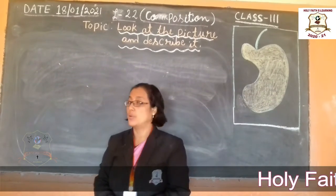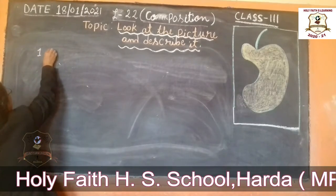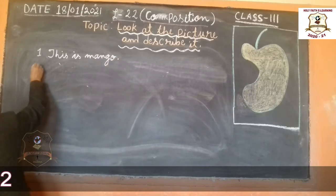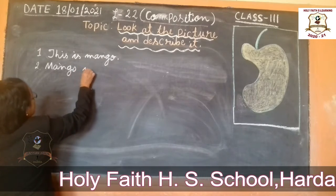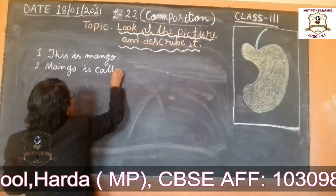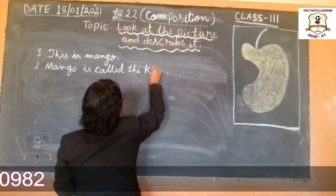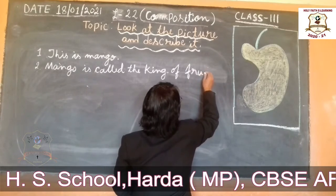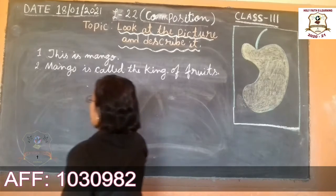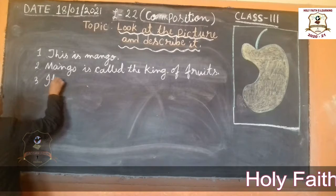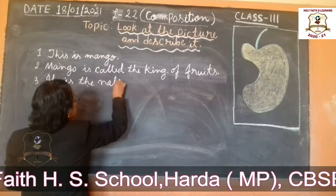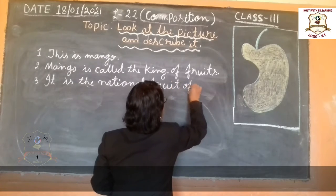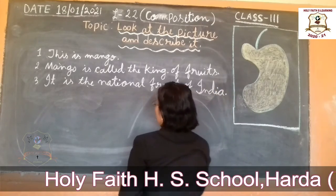Now we write about the mango. See here. Point number 1: This is a mango. Point number 2: Mango is called the king of fruit. Point number 3: It is the national fruit of India.